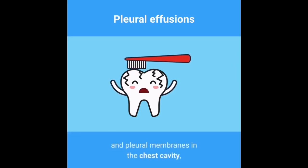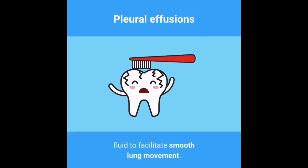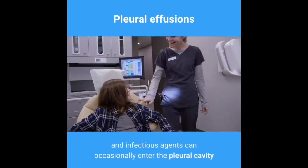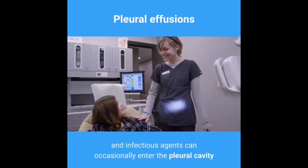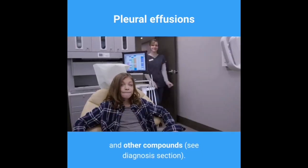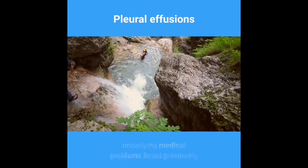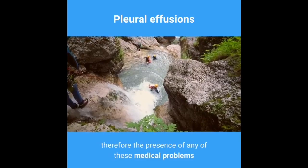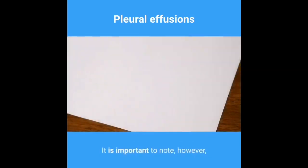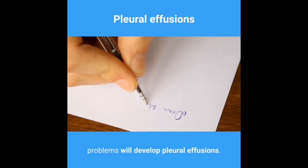The pleural space normally contains a small amount of fluid to facilitate smooth lung movement. Fluid under pressure, malignant cells, and infectious agents can occasionally enter the pleural cavity and cause it to expand with abnormal amounts of fluid and other compounds. The underlying medical problems listed are risk factors for the development of pleural effusions; however, not all individuals with these conditions will develop pleural effusions.